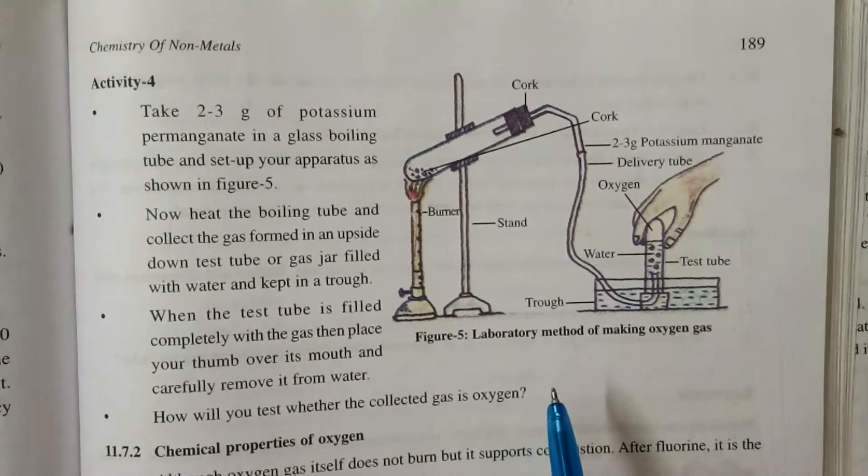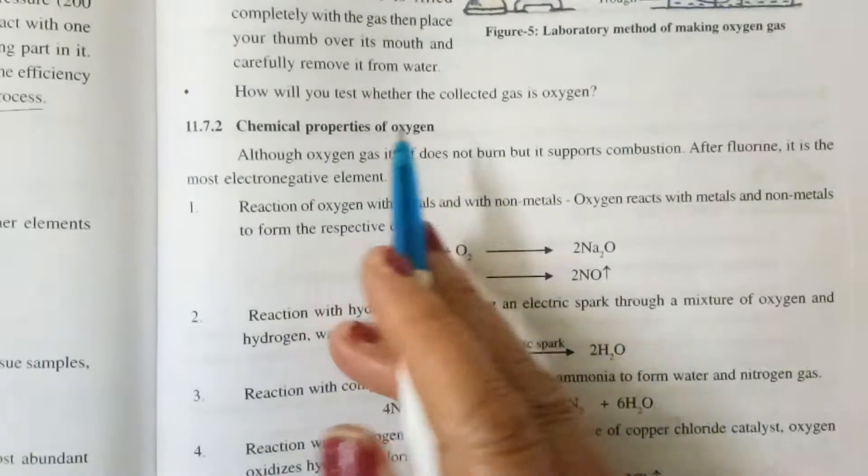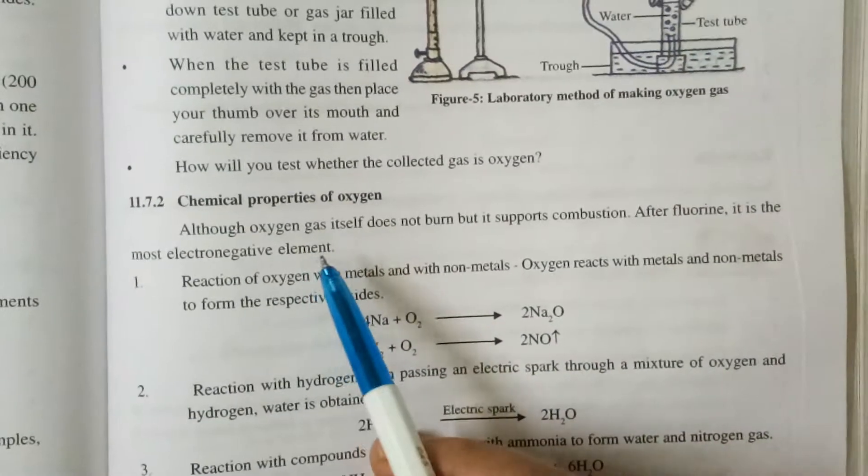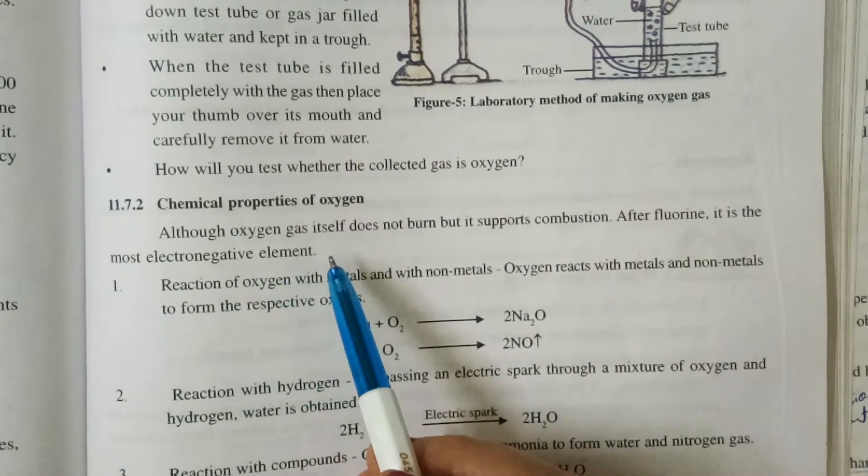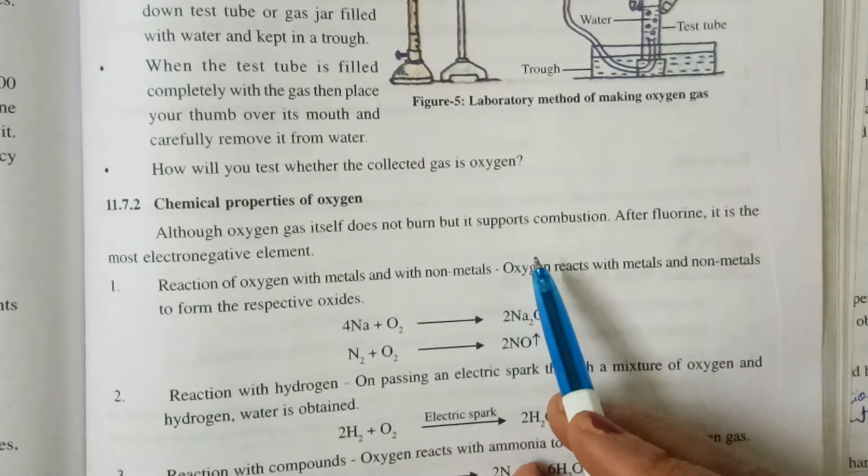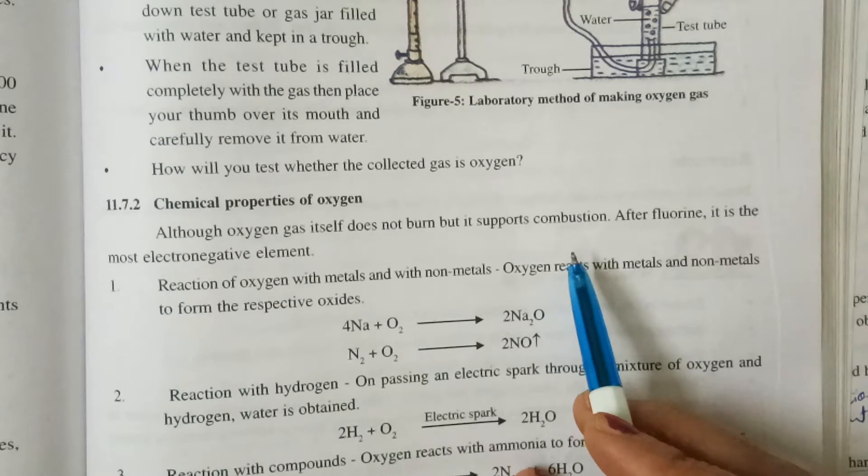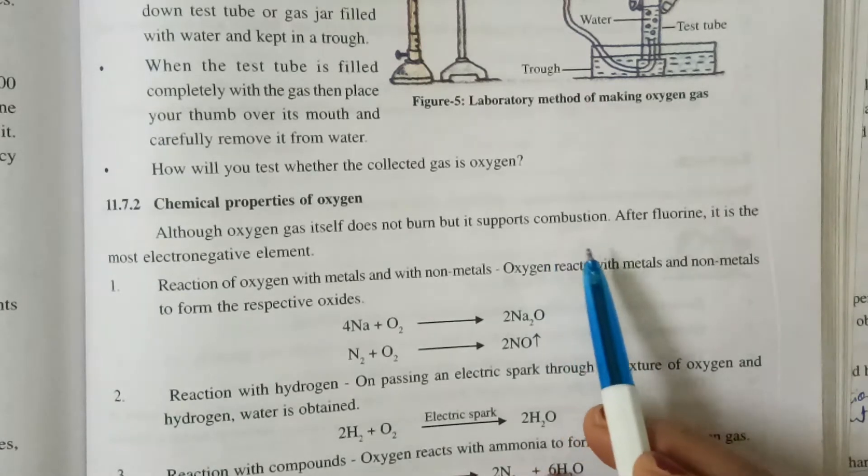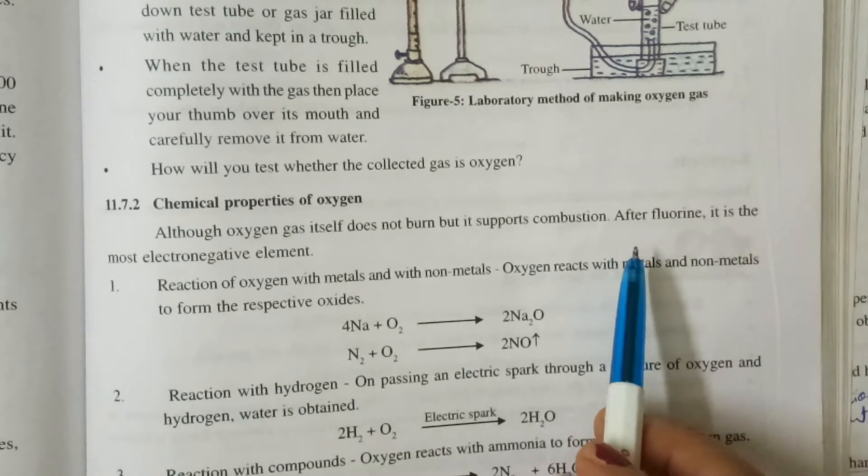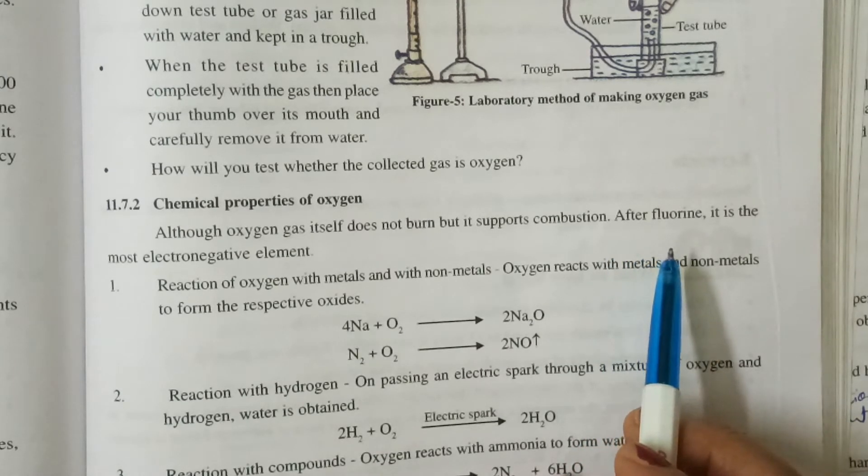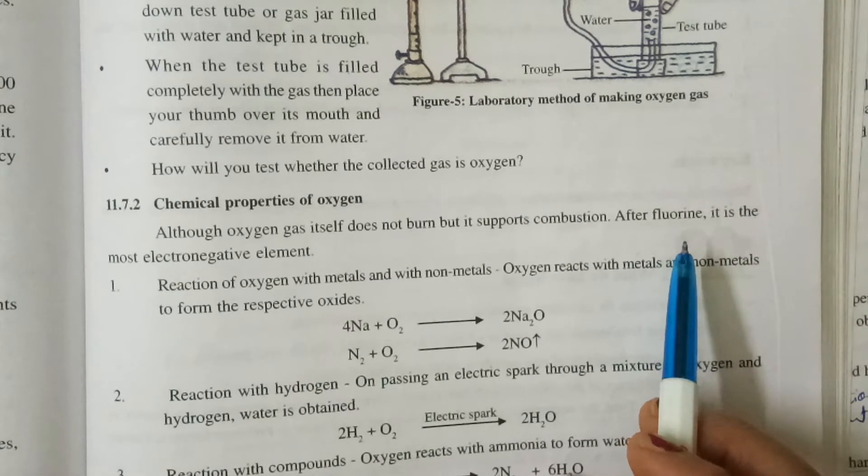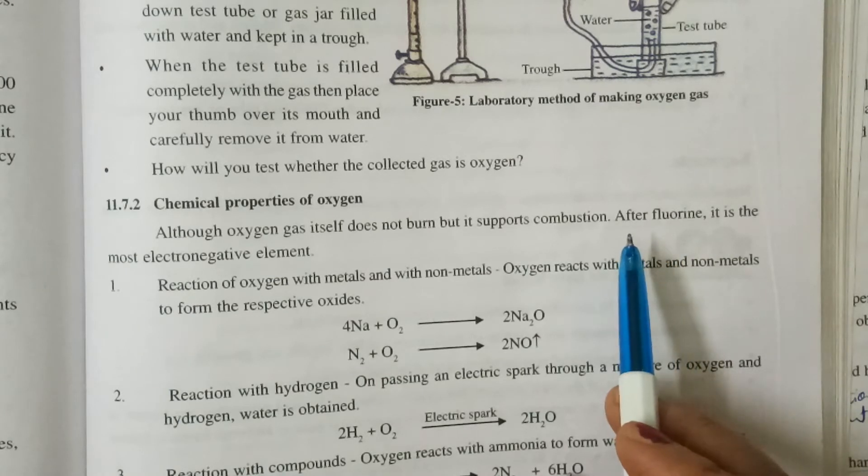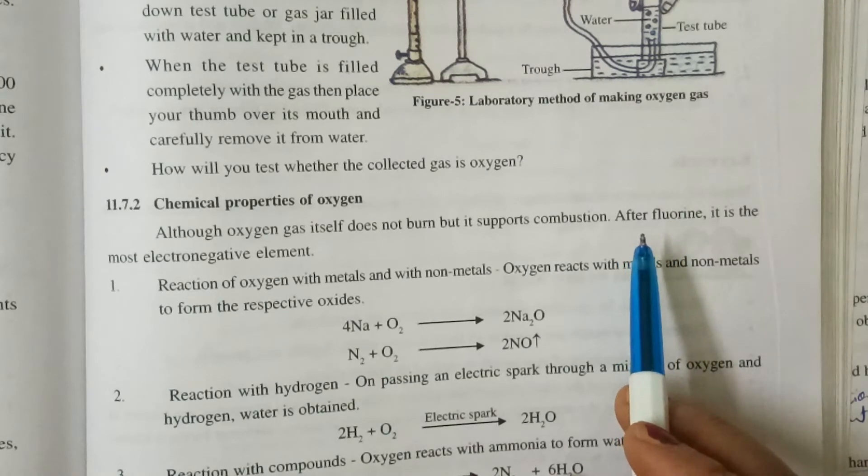In this way, in laboratory, we can prepare oxygen gas. Chemical properties of oxygen. Now students see the chemical properties of oxygen. Oxygen gas does not burn, but it supports in combustion. Oxygen gas itself does not burn, but supports combustion. Oxygen gas. After fluorine, it is the most electronegative element. Fluorine is the most electronegative element and oxygen has second place in electronegativity.